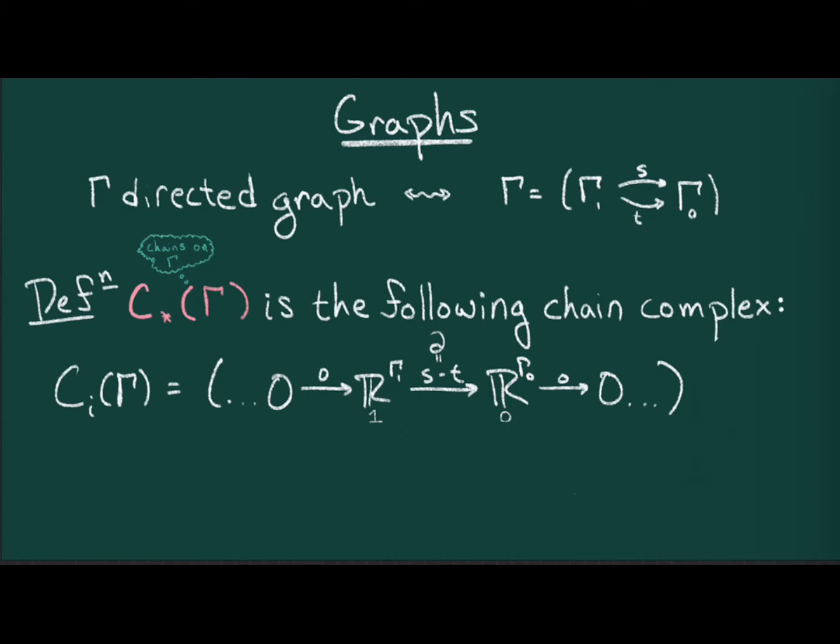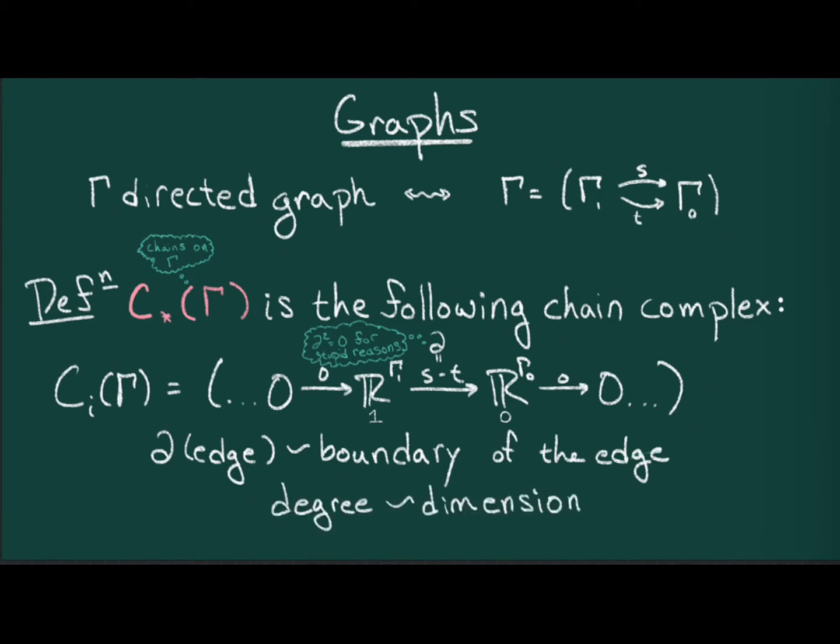The boundary operator takes an edge and outputs the vertex at which it terminates minus the vertex at which it starts. In this case, the master equation holds for stupid reasons. Hopefully, it's clear that the boundary operator evaluated on an edge is basically the boundary of the edge, hence the name boundary operator. Moreover, the degree of an element coincides with its dimension.